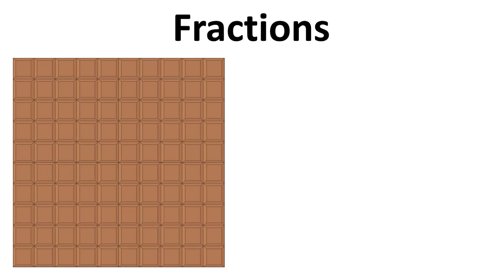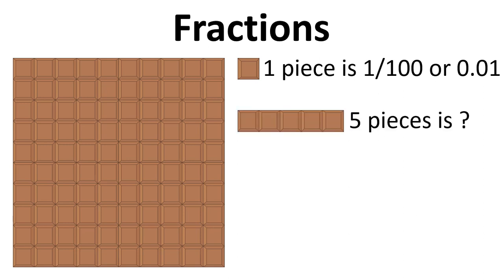So let's explain this again with the chocolate bar. One piece is a hundredth, one over a hundred, or if you write that as a decimal, it's 0.01. Five pieces is five over a hundred. We can simplify that to one over twenty. And as a decimal, that's 0.04.